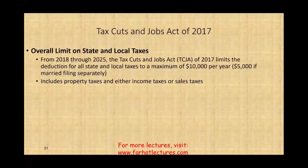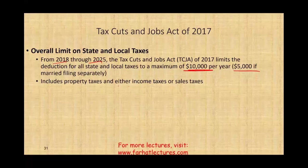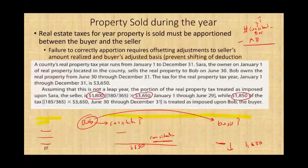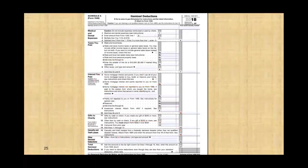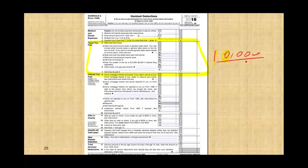One important note from the Tax Cuts and Jobs Act of 2017: from 2018 to 2025, the deduction for all state and local taxes — including property taxes and either income taxes or sales tax — is limited to a maximum of $10,000 per year ($5,000 if married filing separately). Before TCJA this was unlimited. The tradeoff is that the standard deduction was increased, which reduces the benefit of itemized deductions.